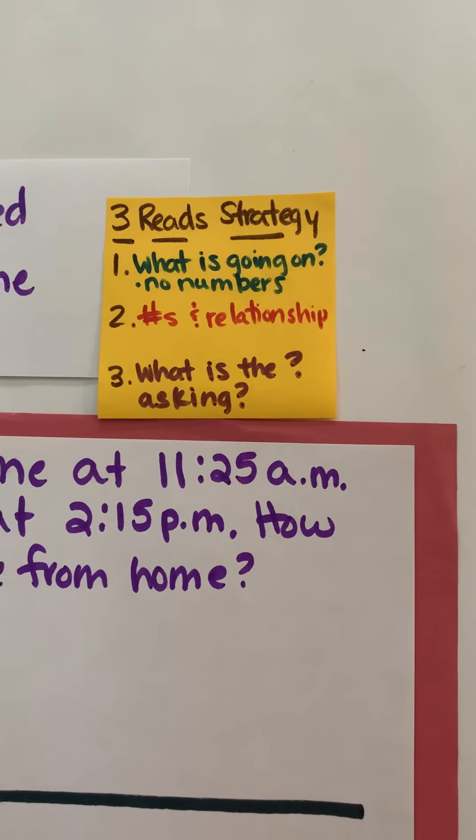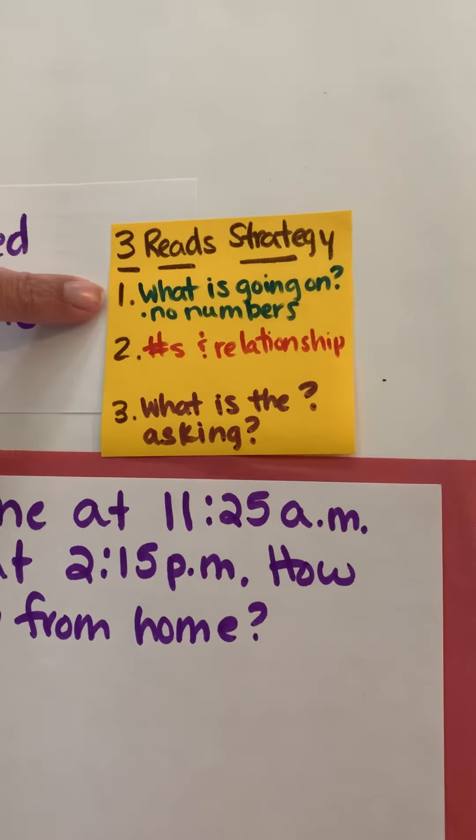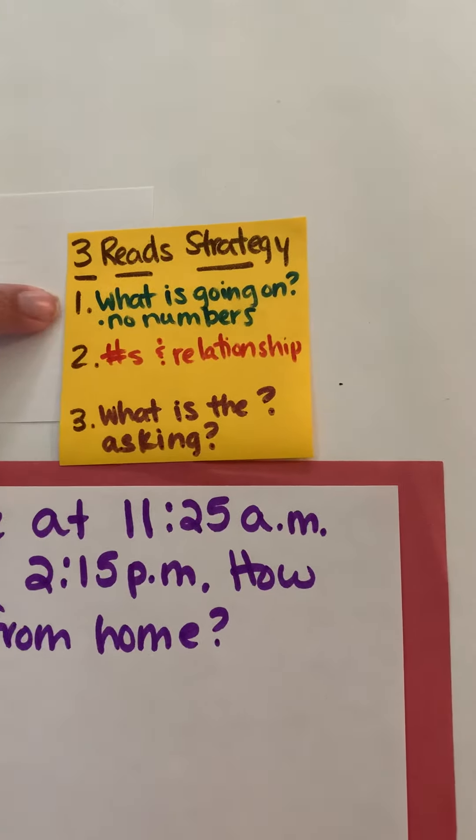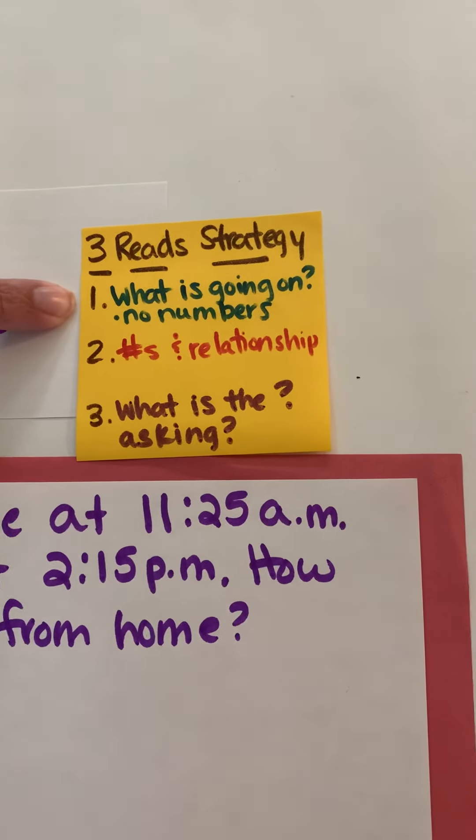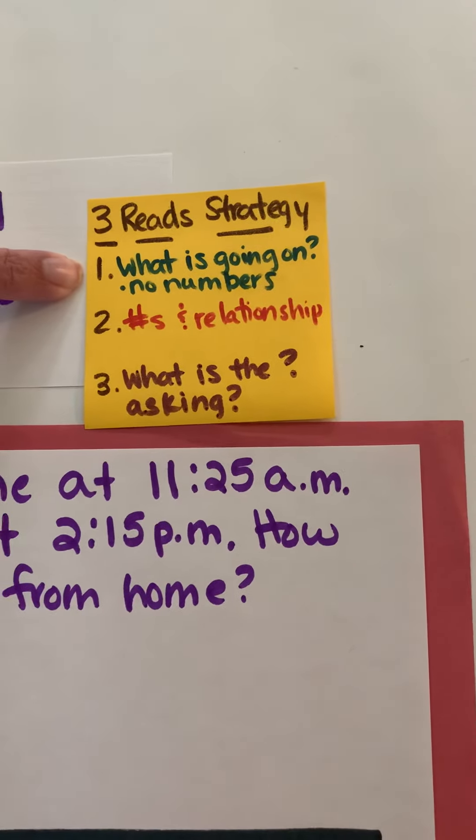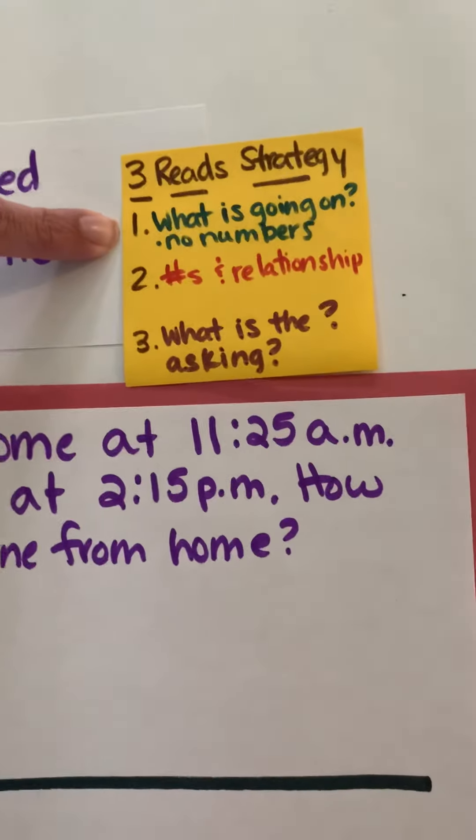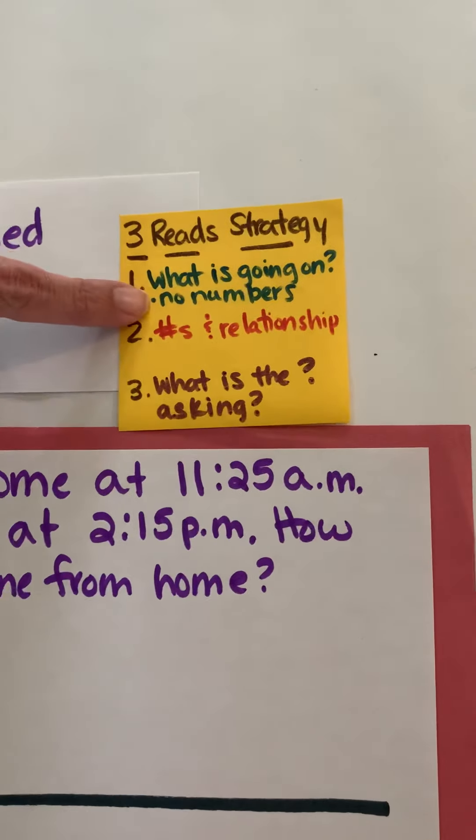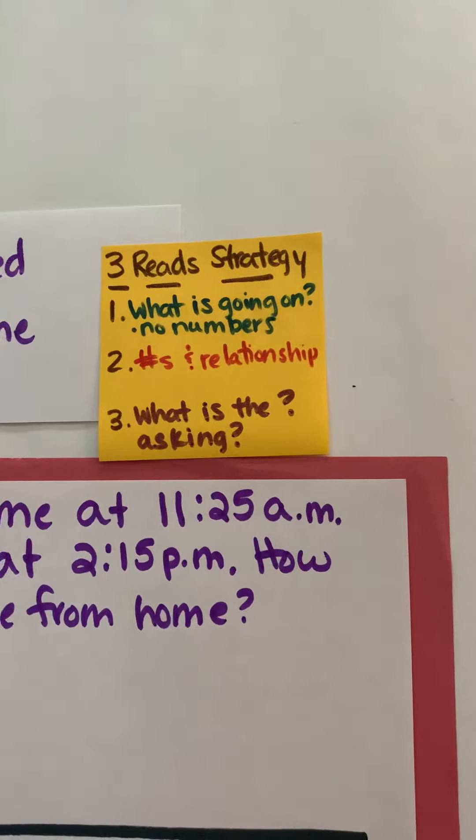So let's just quickly go over the three read strategy. Basically we're going to read it three times. The first time we read it and we focus on what's going on in the story. Basically you summarize it. You do this all the time in reading. Just tell me what's going on. We're not worried about the numbers just who's in it and what are they doing.